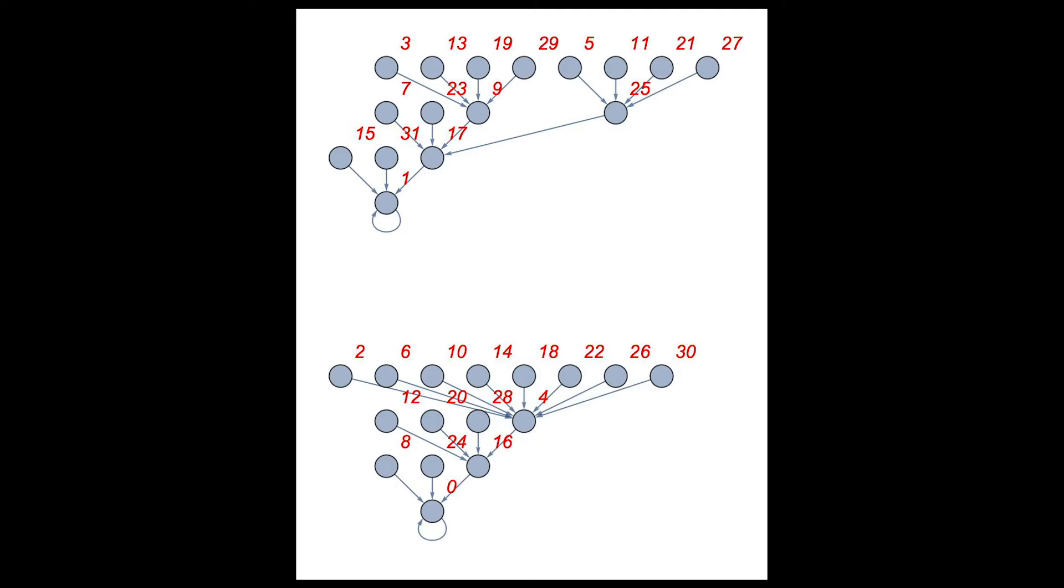The next row gives us odd multiples of 8 plus or minus 1. 8 plus or minus 1 gives us 7 and 9; 24 plus or minus 1 gives us 23 and 25. Finally note that the third row has 16 plus or minus 1 and 31, which is minus 1 itself.